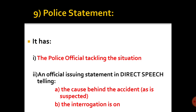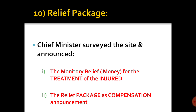Last but not least, the tenth point is the relief package. The Chief Minister or the relevant minister — it could be the Railway Minister — surveys the site, and the announcement will come a little later through television. The monetary relief package, also called the compensation package, is announced for the treatment of the injured as well as for the families of the deceased.